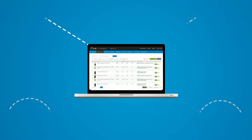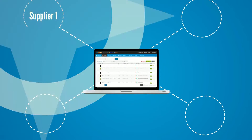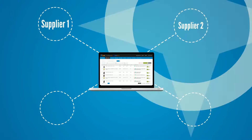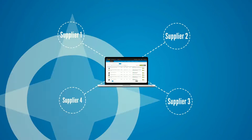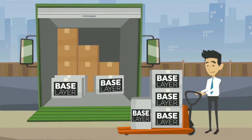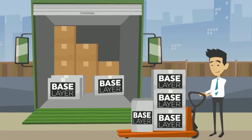AdLister can also automate product and stock feeds from your suppliers or other systems, allowing you to sell thousands of products without the pain.